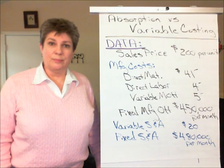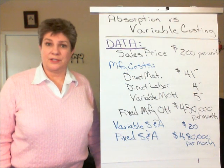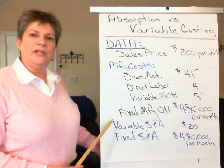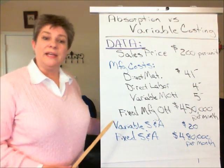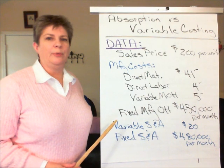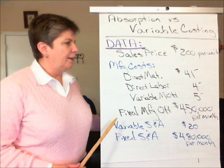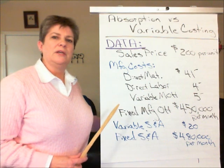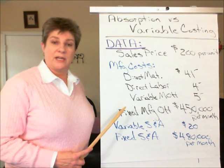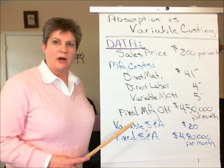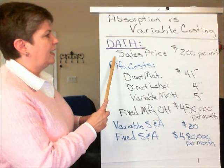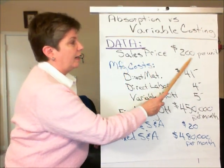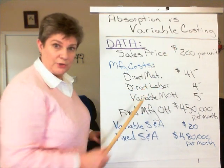Managerial Accounting: Absorption Costing vs. Variable Costing. We have here a set of data for a single product company under a couple of different scenarios. First, let's look at the income statement data — the price and cost data. Notice that they've got a single product and every unit of that product sells for $200 each.